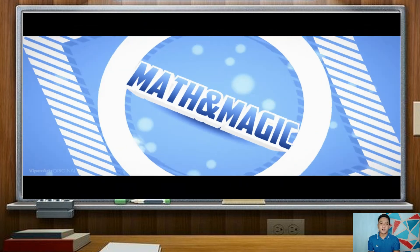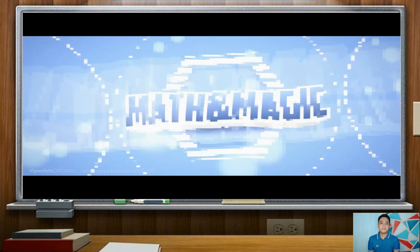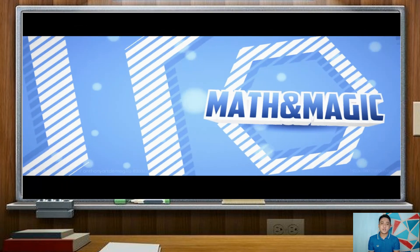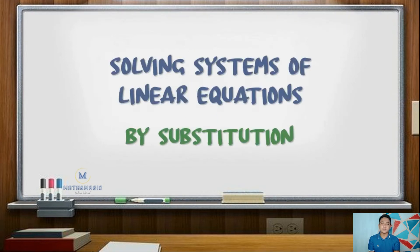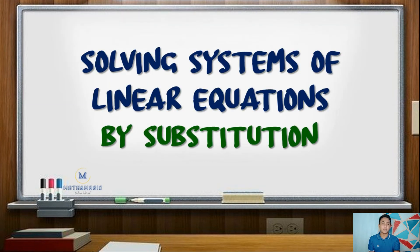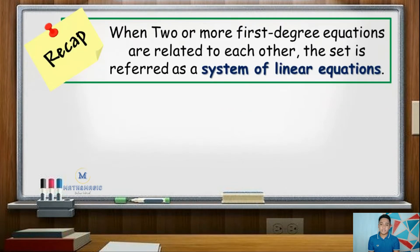Hello students, welcome to Math & Magic. For this video, we are going to solve systems of linear equations in two variables by substitution. As a recap, when two or more first degree or linear equations are related to each other, the set is referred to as a system of linear equations.